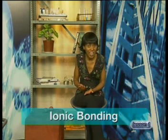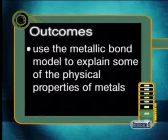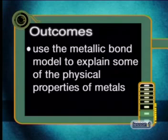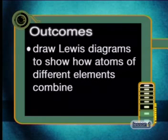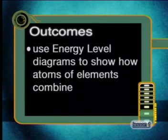We'll start by reviewing the different types of bonding that occur between substances, namely metallic bonding, ionic bonding, and covalent bonding. By the end of this lesson, you should be able to use the metallic bond model to explain some of the physical properties of metals, draw Lewis diagrams to show how atoms of different elements combine, and use energy level diagrams to show how atoms of elements combine.